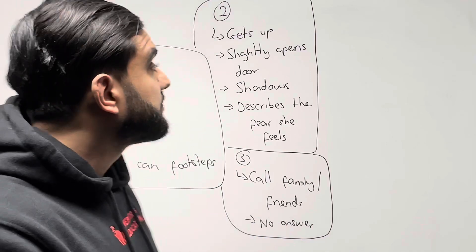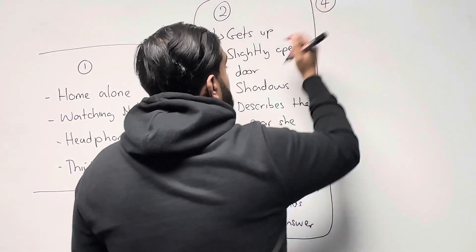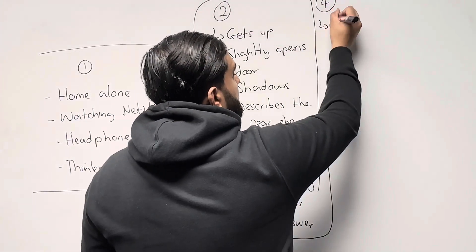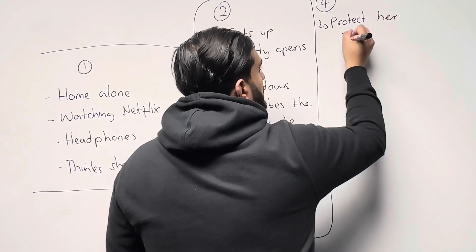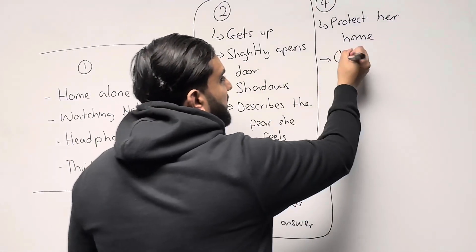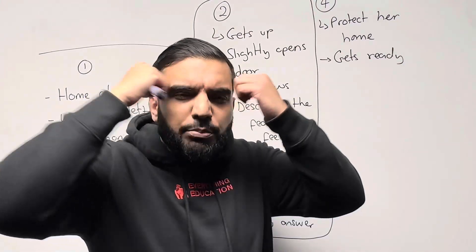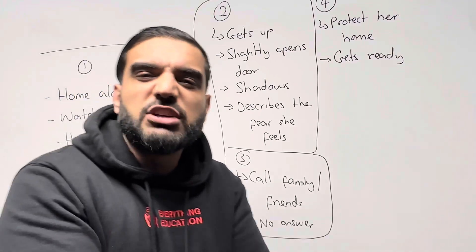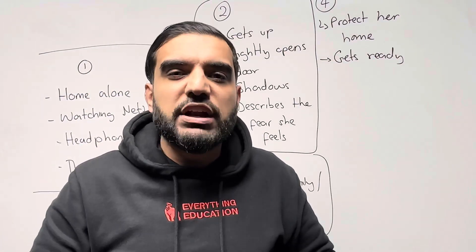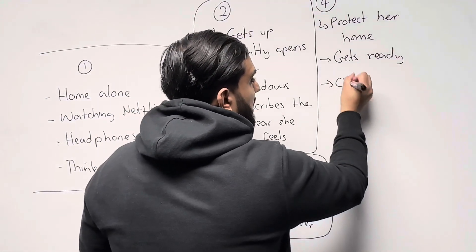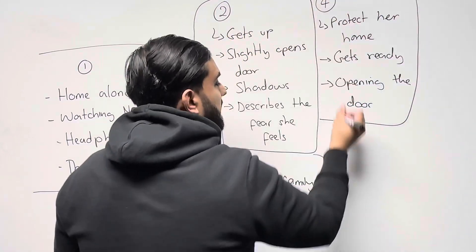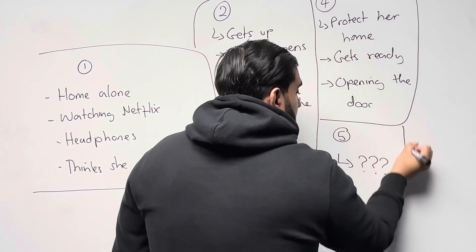Paragraph four: the TV show she was watching was about a girl who becomes a hero and saves the day. So she decides she's going to protect her home — even though she's home alone, today is her day. She gets ready. How you make her get ready is entirely up to you. In my version, she puts army marks on her face, rolls up her sleeves, finds a little pen knife in her drawers, grabs a hairdryer acting like a gun — she's fully ready. Paragraph four ends with her opening the door and facing the intruders.